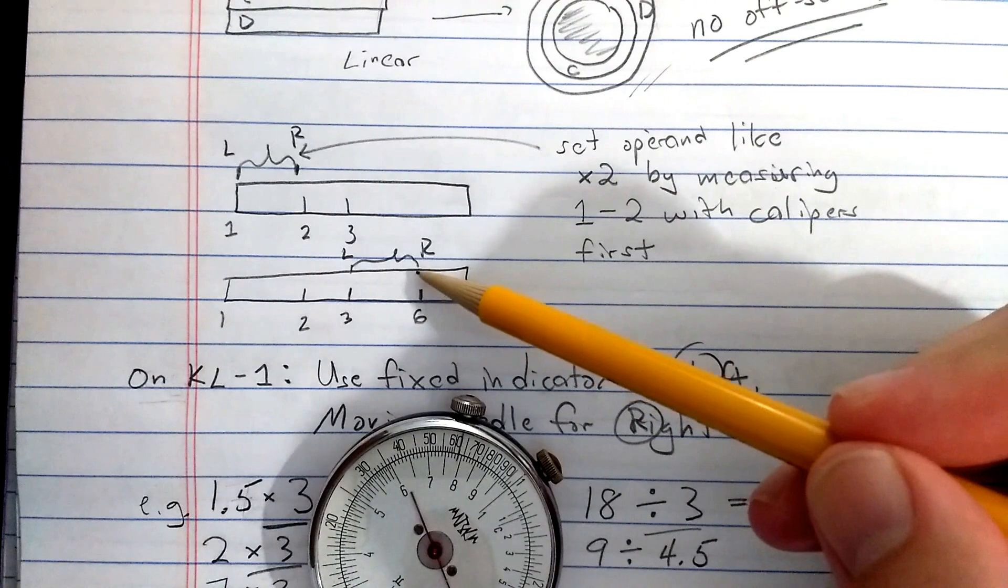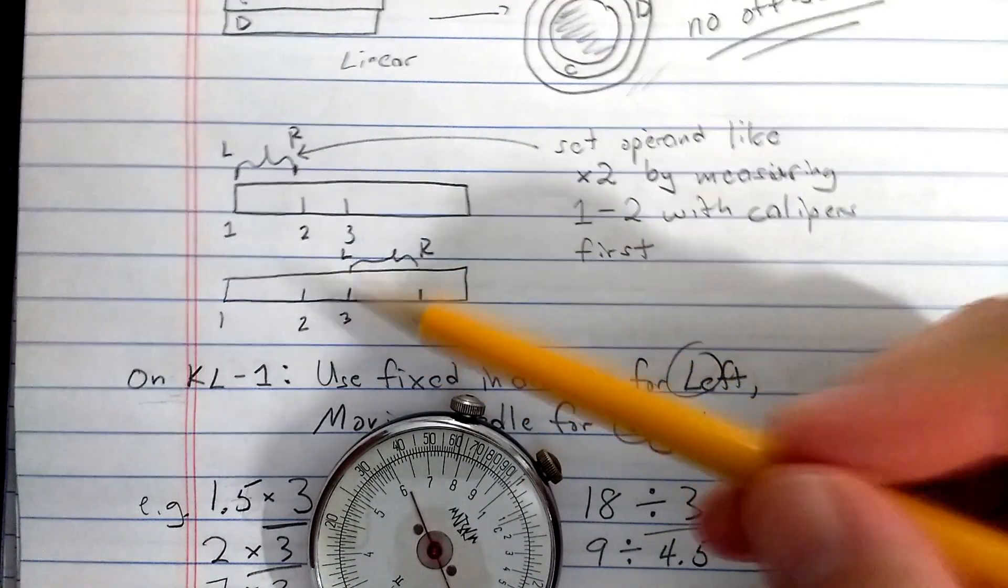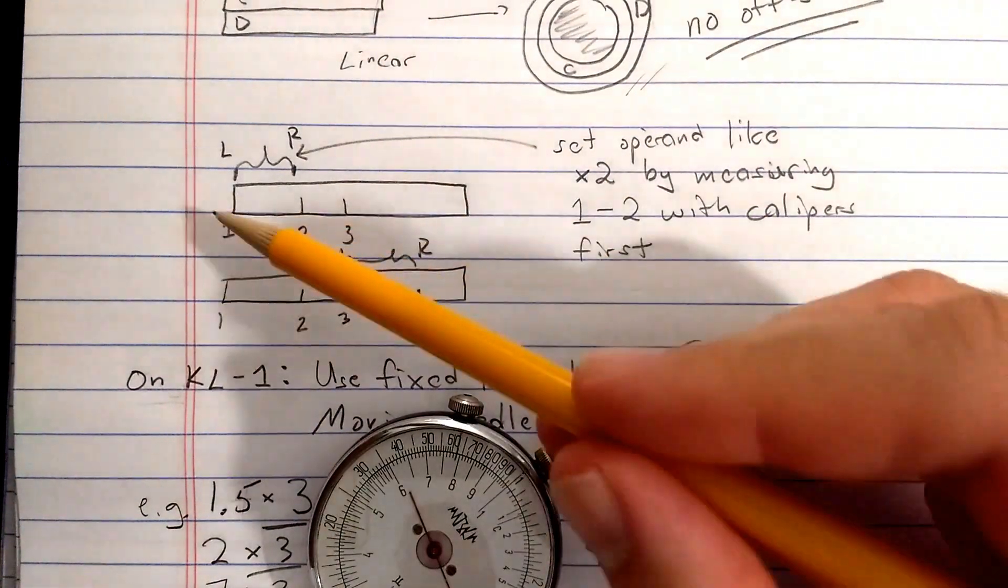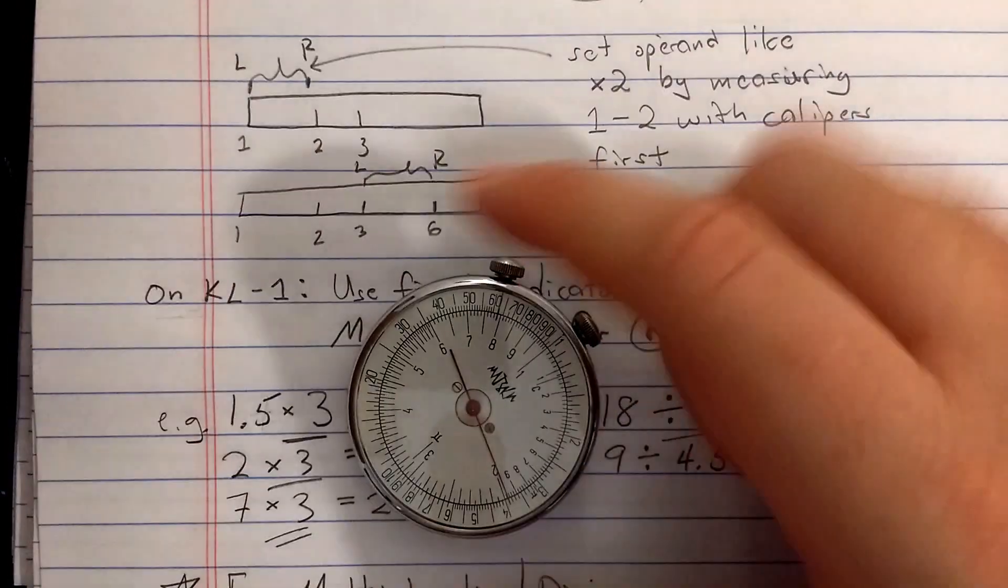Of course, if I do it in reverse by aligning the right end of the calipers with the 6, then going back that distance does division. So I've really just set the 2 and I can either multiply or divide by 2 after I've set the 2.